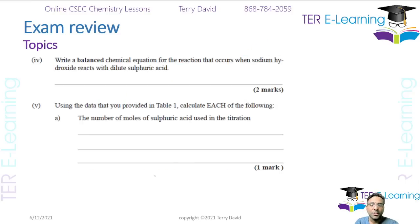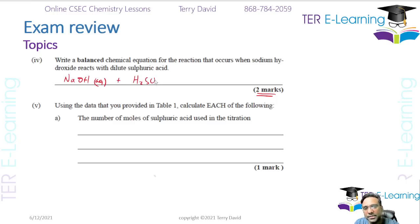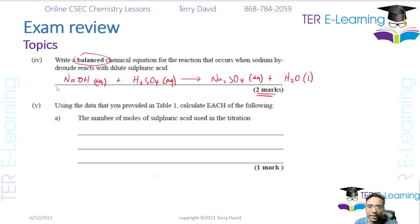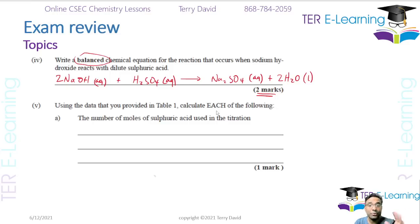Write a balanced equation for the reaction between sodium hydroxide and sulfuric acid. Starting with NaOH(aq) + H₂SO₄(aq) → Na₂SO₄(aq) + H₂O(l), this equation is not balanced. Putting a 2 in front of NaOH and a 2 in front of H₂O gives: 2NaOH + H₂SO₄ → Na₂SO₄ + 2H₂O. Notice they have 'balanced' in bold — if you don't balance it, you won't get full marks.